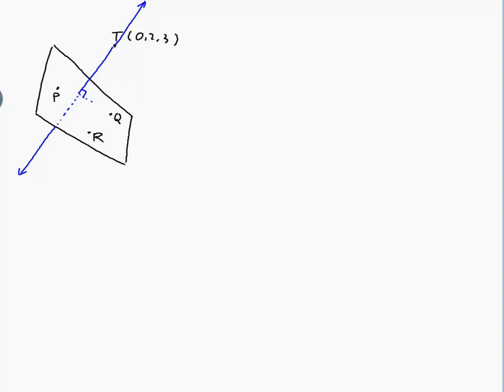So, I know that I can use that vector. Let me just write that down properly. PR cross PQ, which was equal to (6, -12, 0), is perpendicular to every vector in the plane.